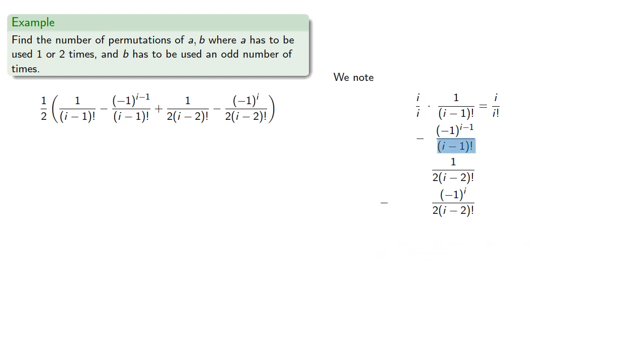Here, we're missing another factor of i. Here, our factorial begins at i minus 2, so we need to include i and i minus 1 to get the full i factorial, and we'll move that 2 into the numerator, and likewise for the last term.